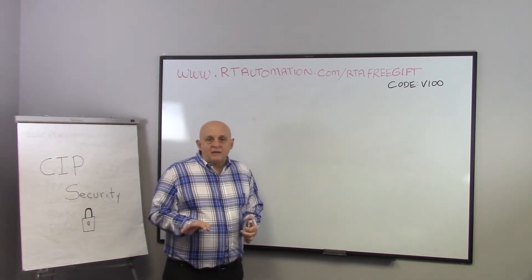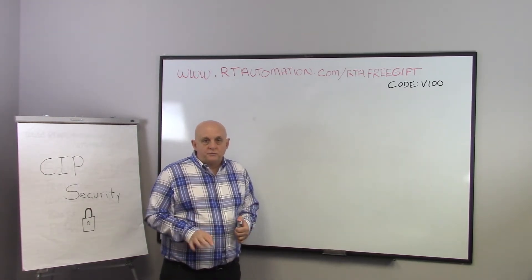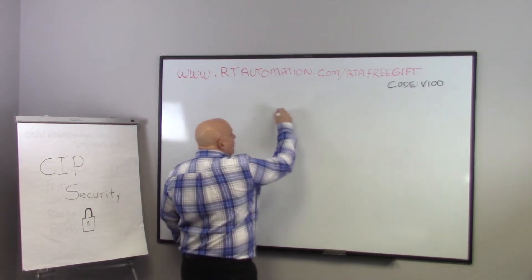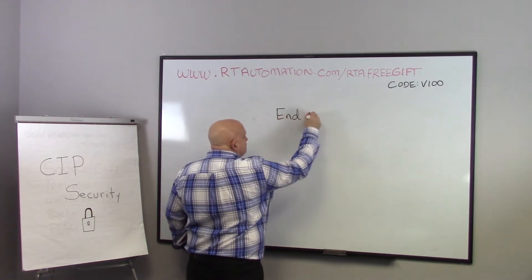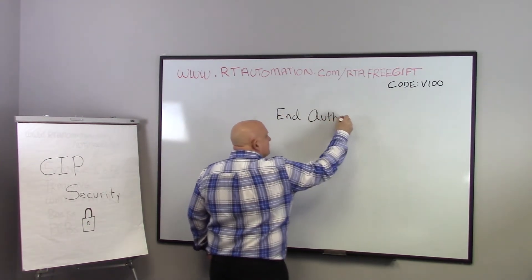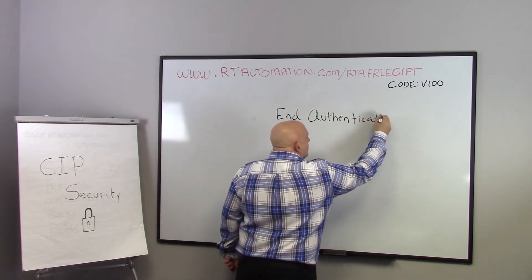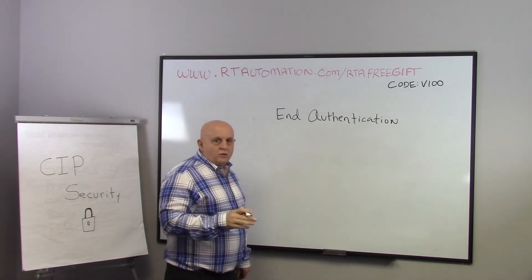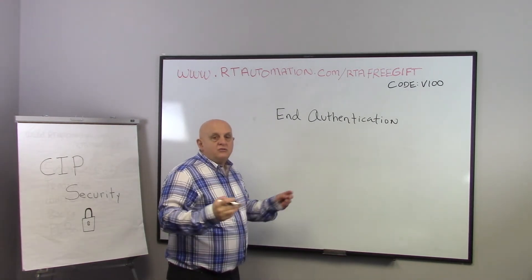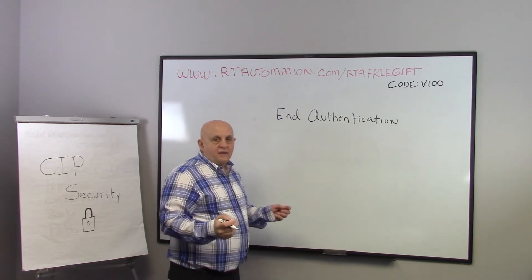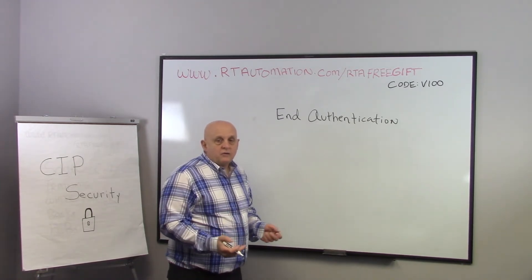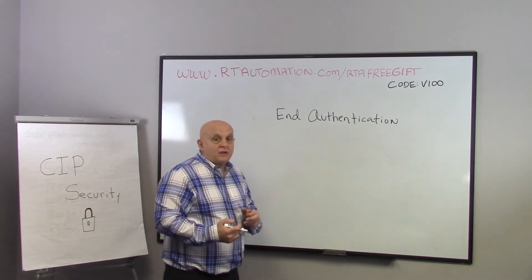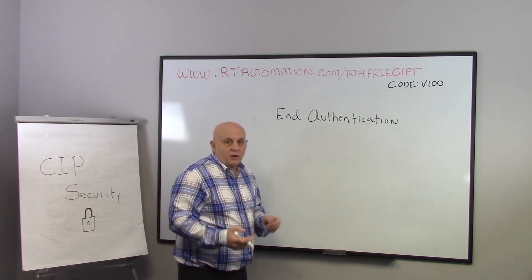SIP Security is designed to counter all of these problems, and specifically it's supposed to do four things. Number one, endpoint authentication. Endpoint authentication means that when a controller talks to a device, both sides know that the other side is who they say they are. The controller knows that this is really the valve it wants to talk to, and the valve knows that it's really the controller talking to it, not some outside entity.